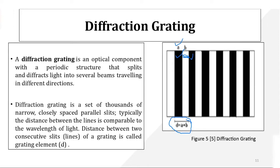When you add 'a' plus 'b', that distance is called the grating element 'd'. In this experiment, laser light is incident on the diffraction grating and we observe the diffraction pattern on the screen. Using the maxima and minima on the screen, we experimentally find the value of 'd', the diffraction grating element.